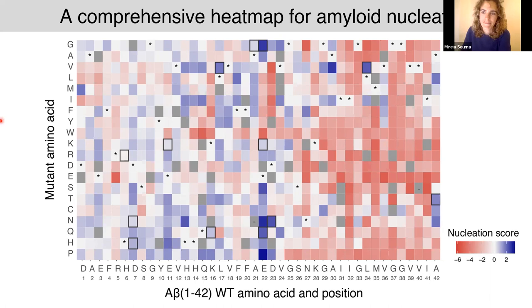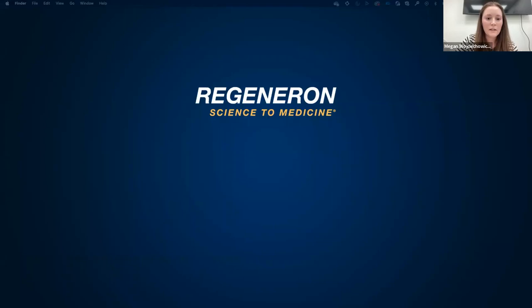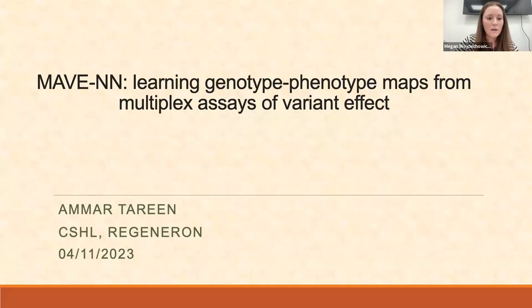Our next speaker is Dr. Amar Tareen. Dr. Tareen was trained as a non-equilibrium statistical physicist during his PhD at Clark University in Massachusetts. Subsequently, he did further training as a quantitative biologist, working on the interface of massively parallel assays and machine learning methods at the Cold Spring Harbor Lab.